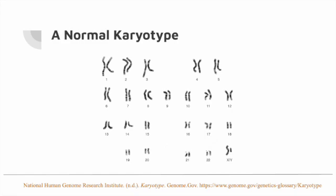Here we have a normal karyotype. The chromosomes are arranged by chromosome number appropriately. As you can see, there are 23 pairs — 22 autosome pairs and one pair of sex chromosomes. The sex chromosomes indicate that this baby is a male, so this is a healthy baby boy with no chromosomal disorders or abnormalities.